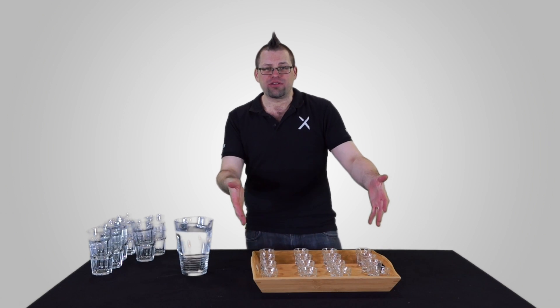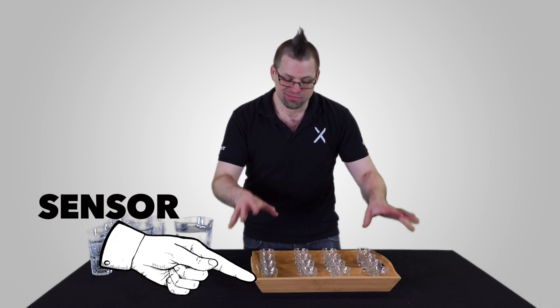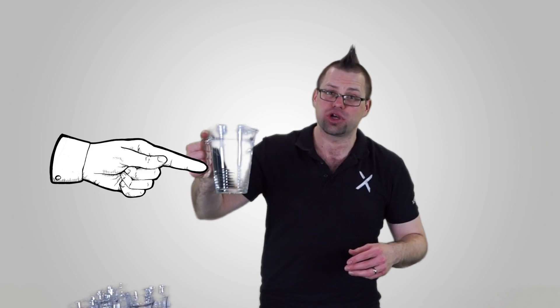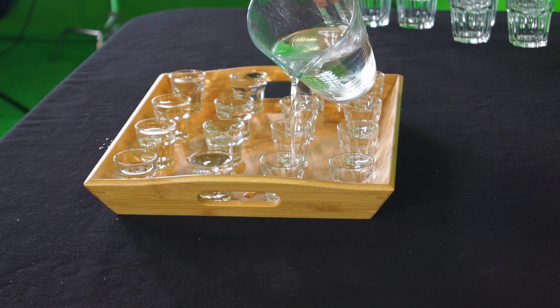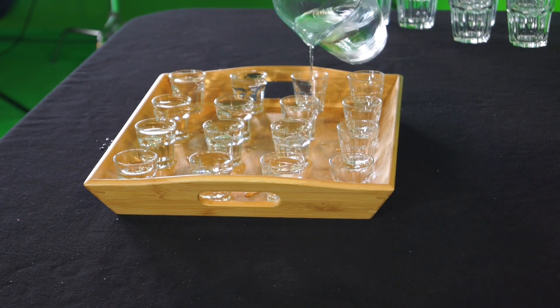This tray of glasses is going to represent a sensor and its megapixels. And this jug of water is going to represent light. Capturing light really is what photography is all about.